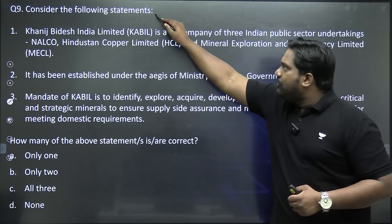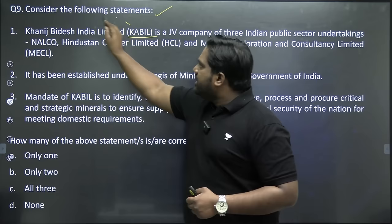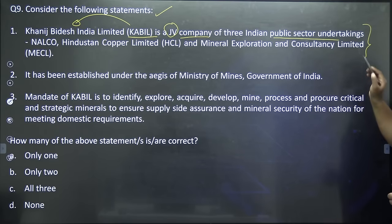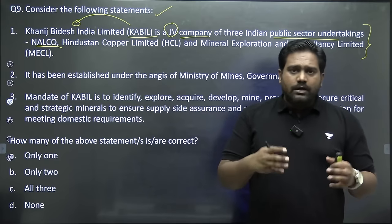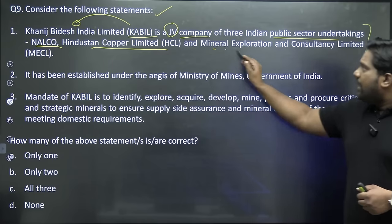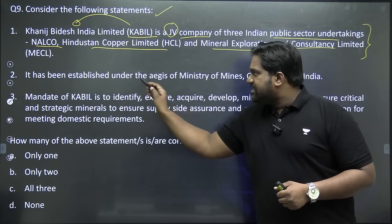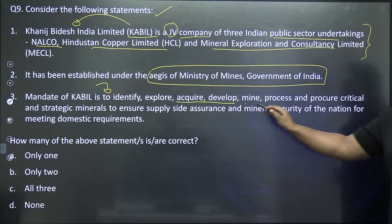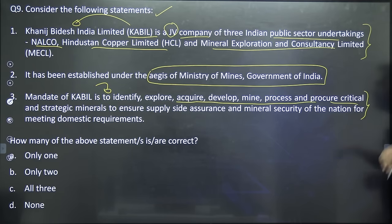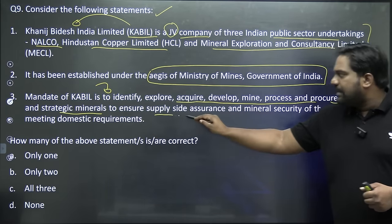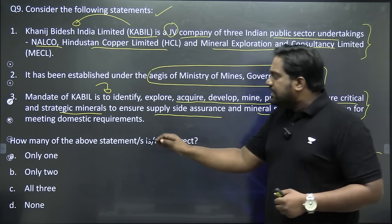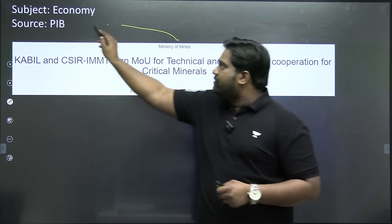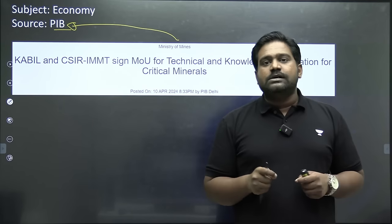Now coming to the last question. Consider the following statements: KABIL or Khanij Bidesh India Limited is a joint venture company of three Indian public sector undertakings — NALCO (National Aluminium Company), Hindustan Copper Limited, and Mineral Exploration and Consultancy Limited — established under the aegis of the Ministry of Mines, Government of India. Its mandate is to identify, explore, acquire, develop, mine, process, and procure critical and strategic minerals to ensure supply and mineral security for meeting domestic requirements. This topic was in news because of a press release from the Ministry of Mines referring to this joint venture.